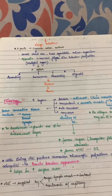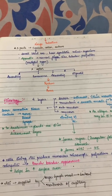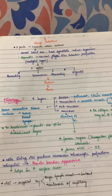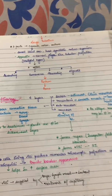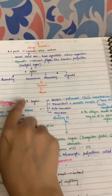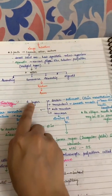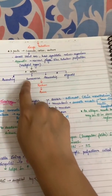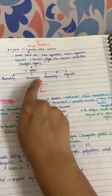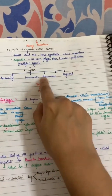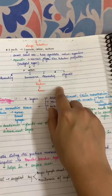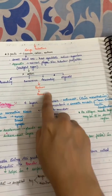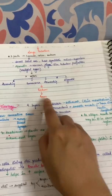The colon is divided into four parts: ascending, transverse, descending, and sigmoid. After the colon comes the rectum and then the anus.